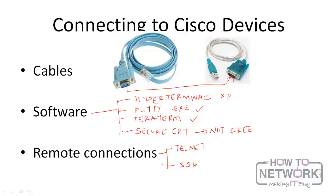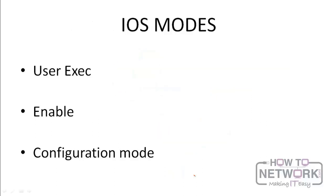Another way you can configure devices remotely is using HTTP and HTTPS, which is used to configure through a web interface — that's why you have GUIs like the CCP, ASDM, and IDM. Now let's move on to the IOS modes. The Cisco IOS is filled with various device configuration modes, and you will need to understand what mode you're in to know what commands you can apply.